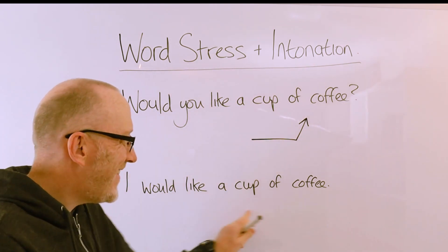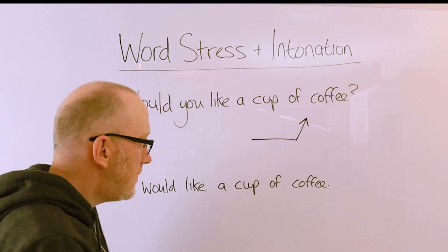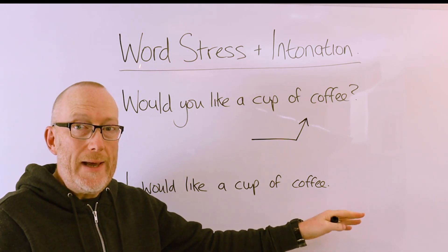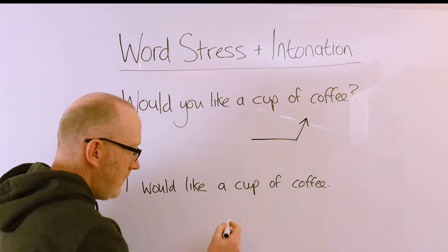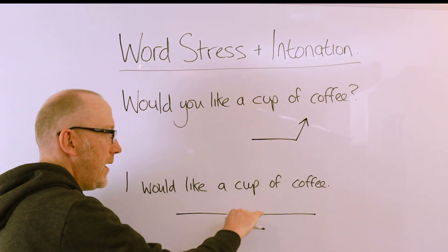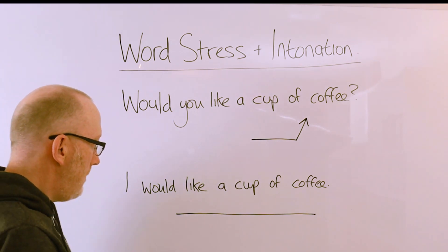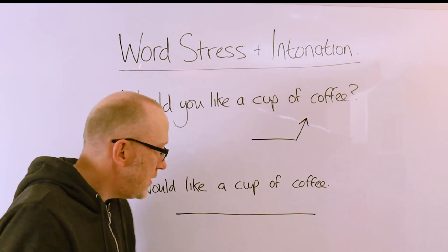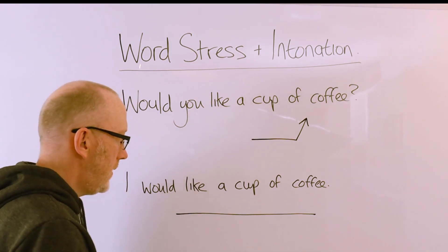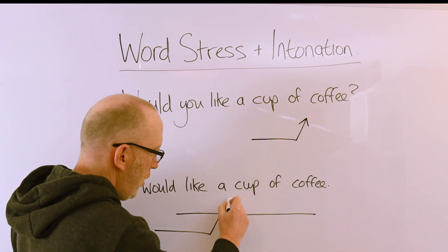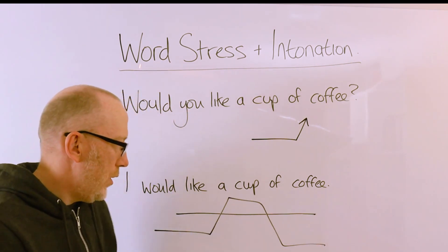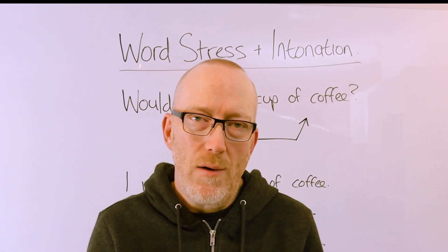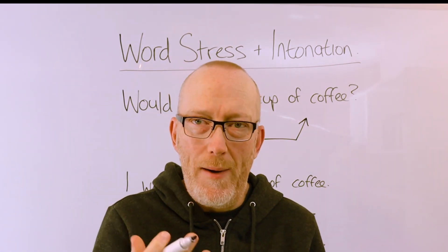When we're making statements, we can use intonation too. A statement can be quite flat: 'I would like a cup of coffee, please.' If I could visualize that, it would look something like that — 'I would like a cup of coffee, please.' So our sentence would look a little bit more like that rather than flat.